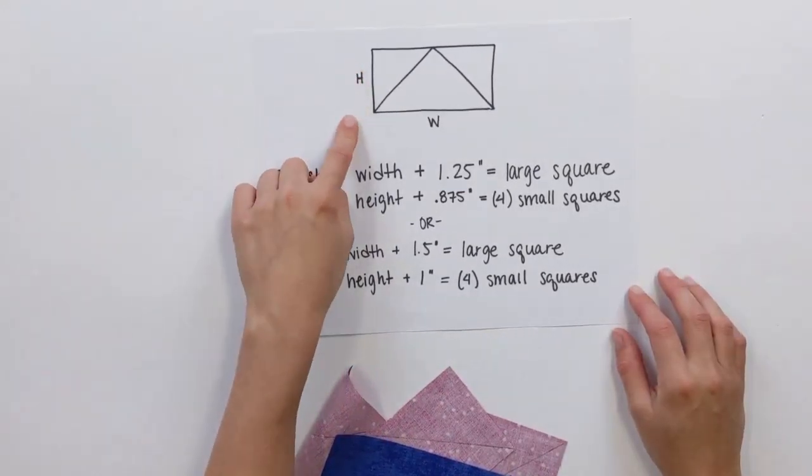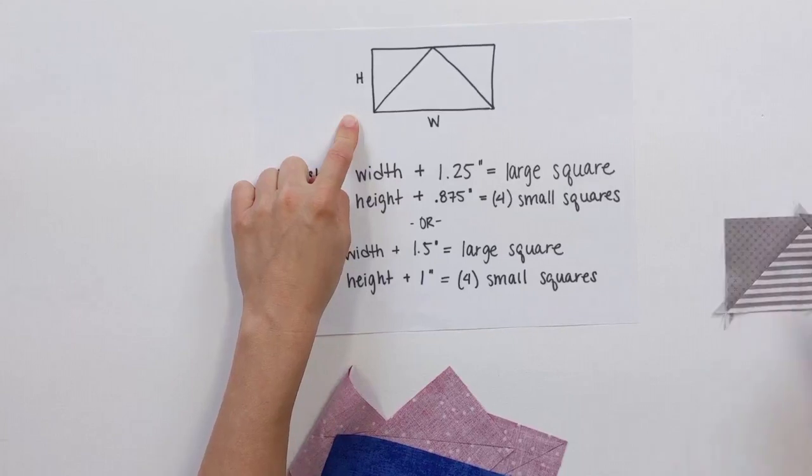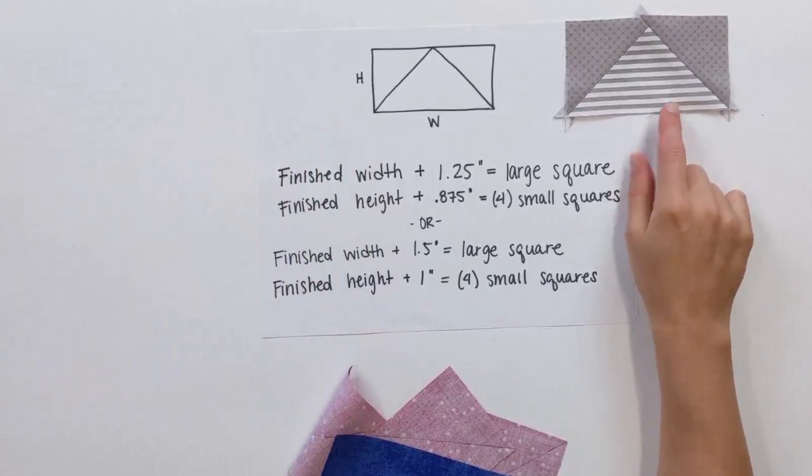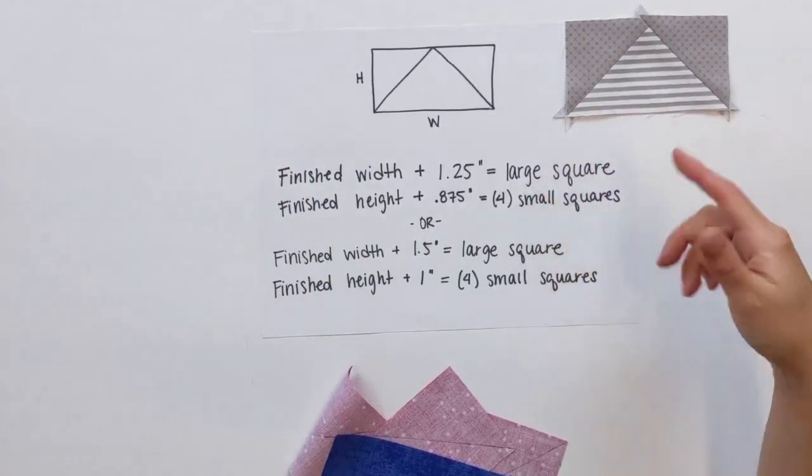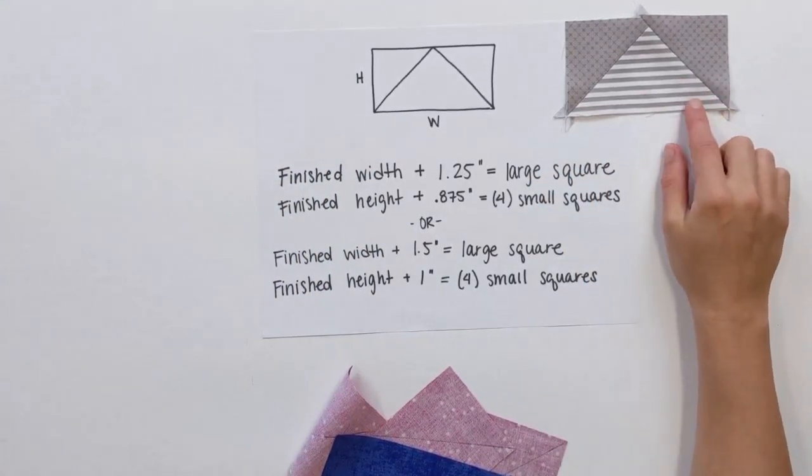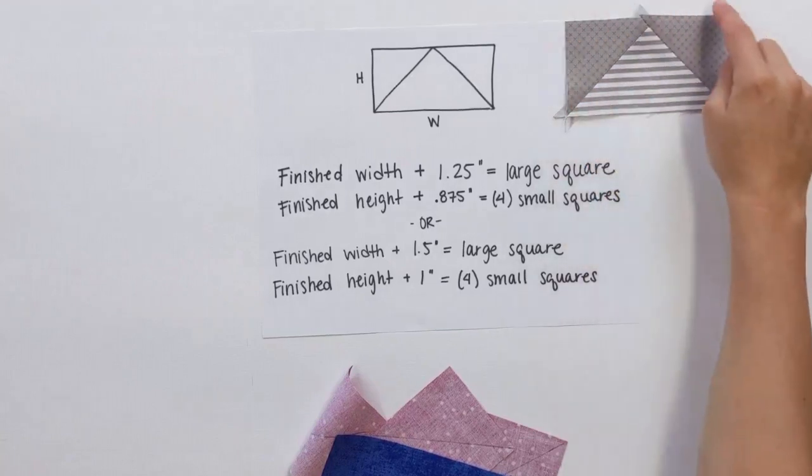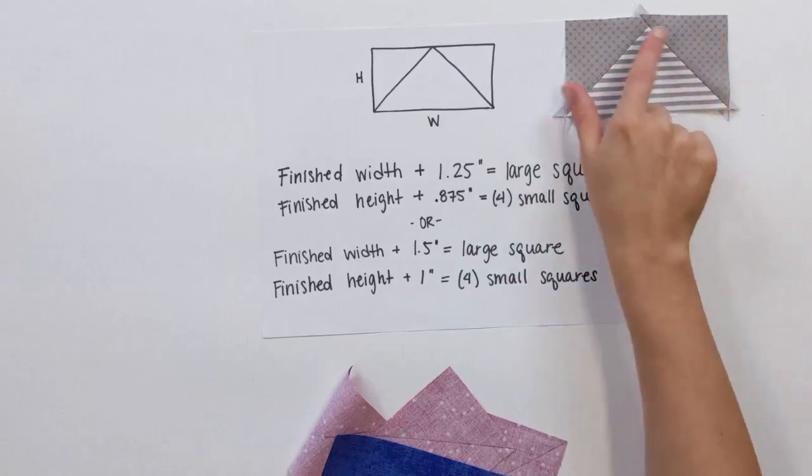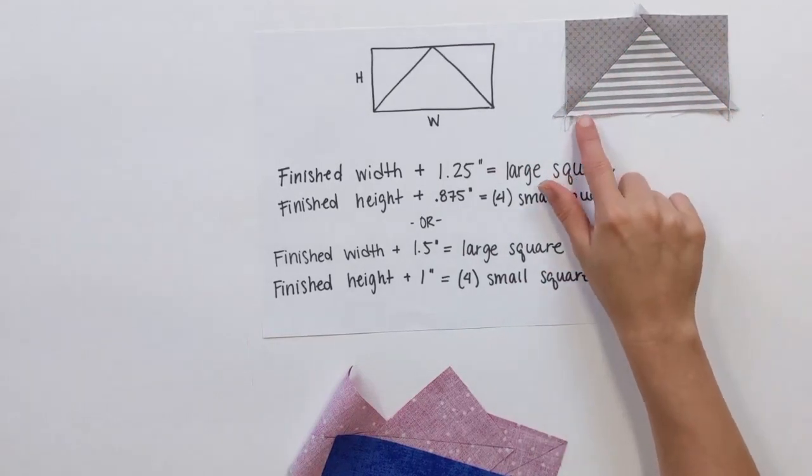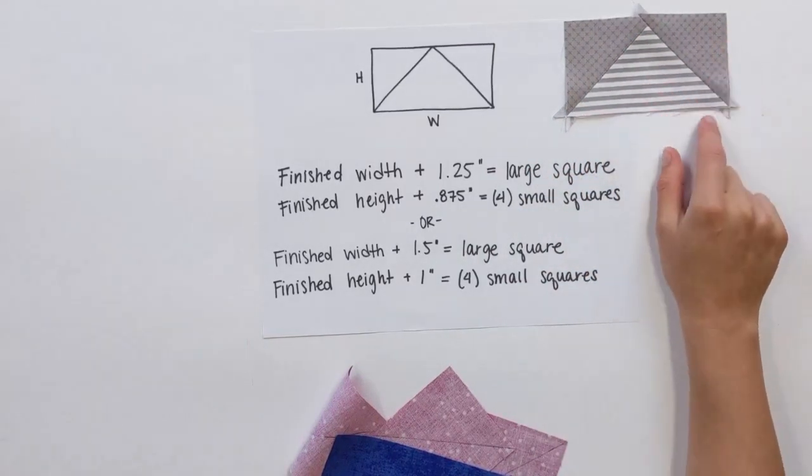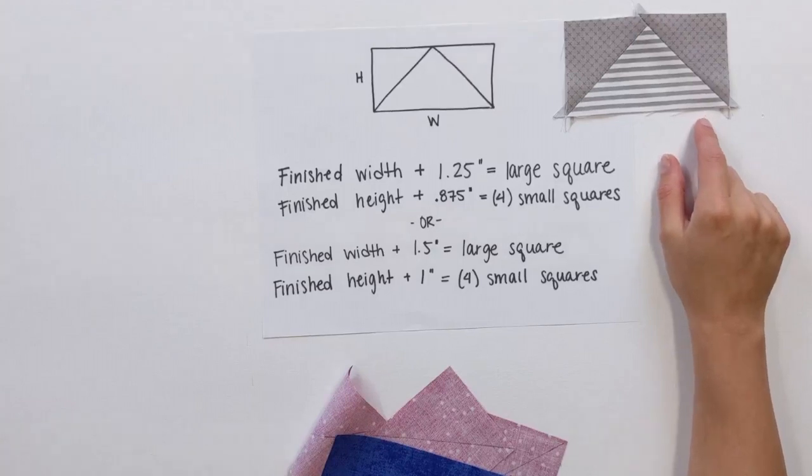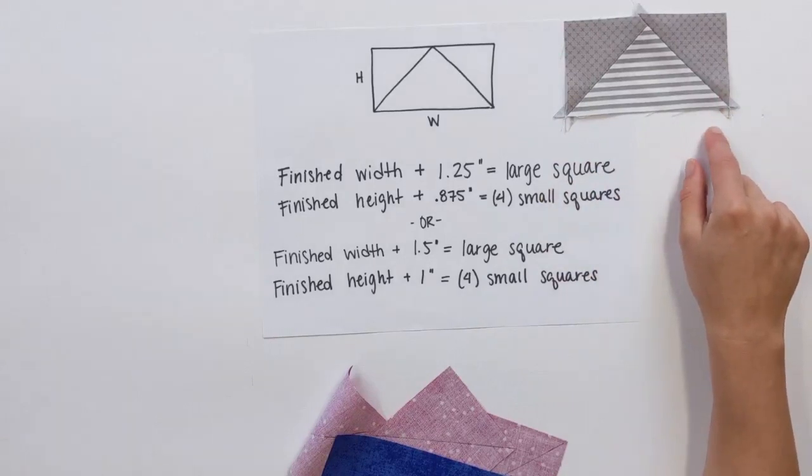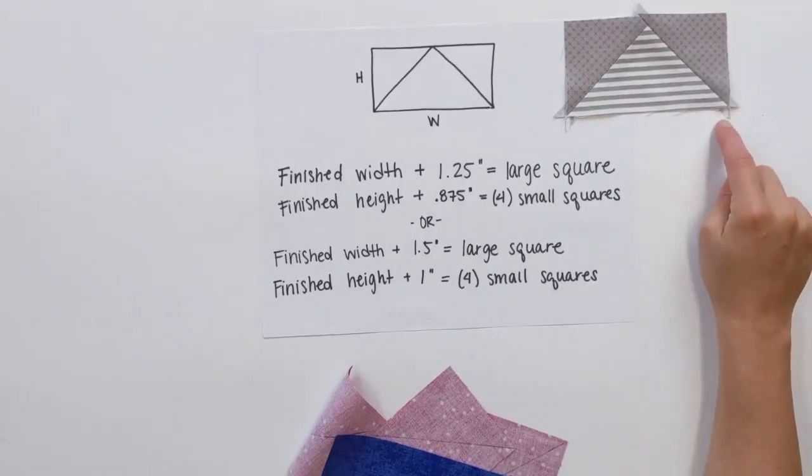We have the height, the finished height of our flying geese unit. We'll use this guy as our example. Finished height and finished width. So this is unfinished. You'll notice I haven't trimmed it. I haven't sewed it into my block. So what we want to do is we want to figure out what it's going to look like finished. So your finished height and your finished width, once I trim this and sew it up, this one will be four inches by two inches. So we'll use that as our example. You'll notice with flying geese units that the width is always double the height. So this is going to be four inches finished. That means that this is two inches high finished.